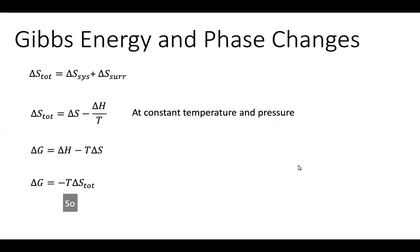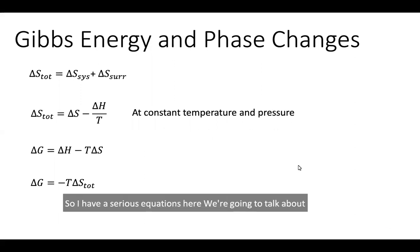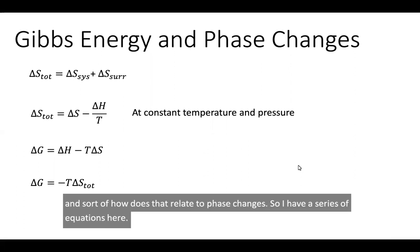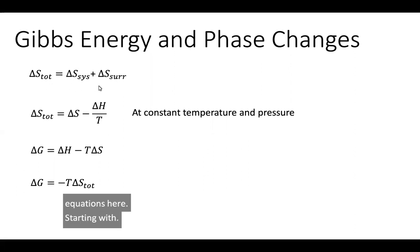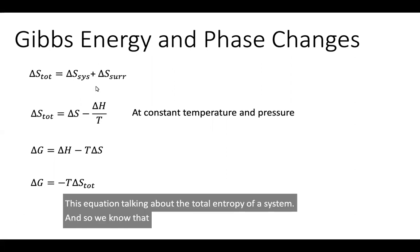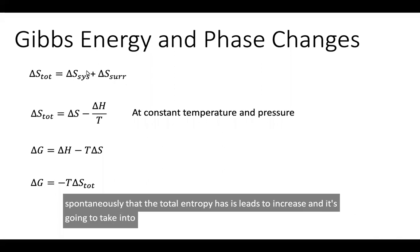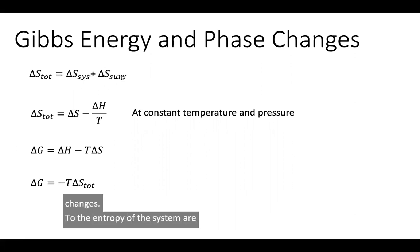So I have a series of equations here. We're going to talk about the Gibbs energy and how that relates to phase changes. Starting with this equation talking about the total entropy of a system. We know that in order for a process to occur spontaneously, the total entropy has to increase and it's going to take into account the changes to the entropy of the system and changes to the surroundings.